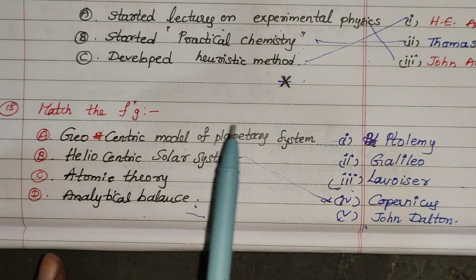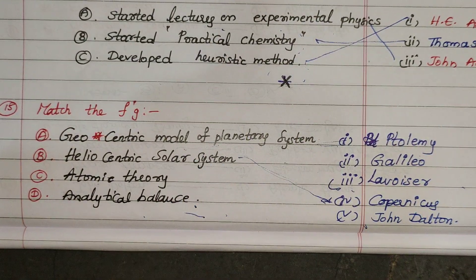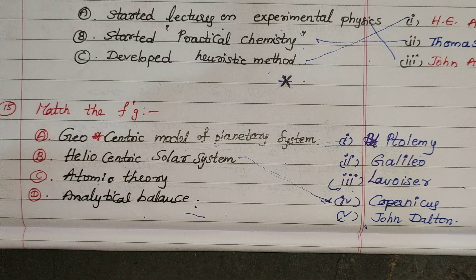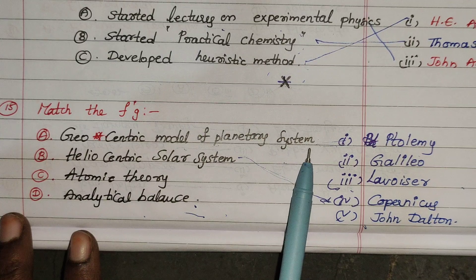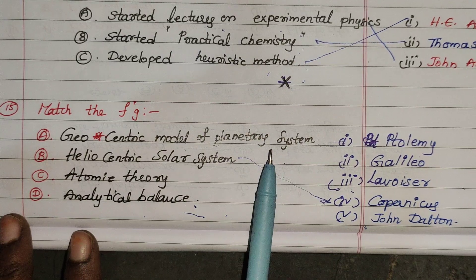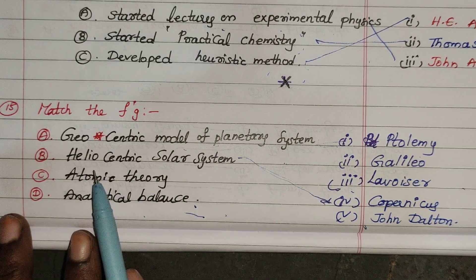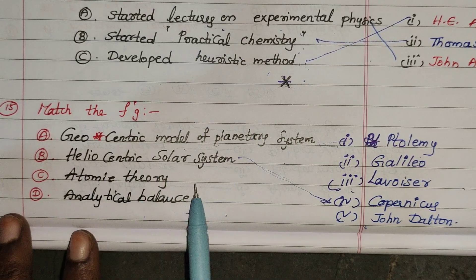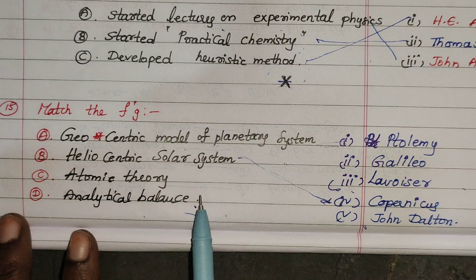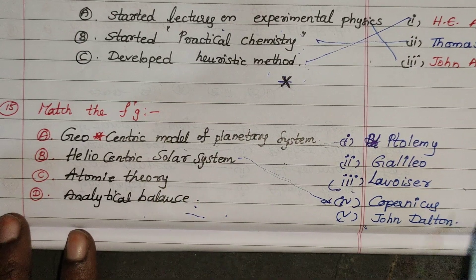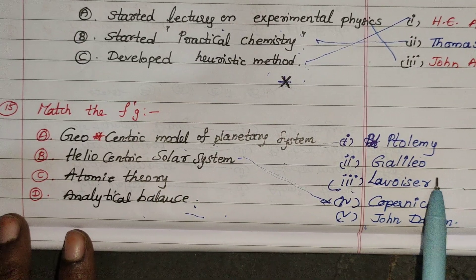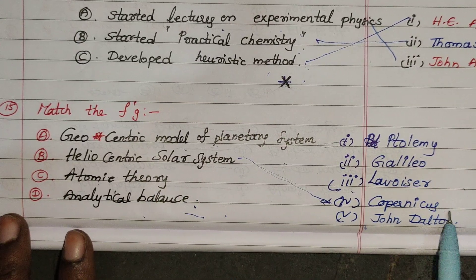Next question — match the following: Geocentric model of planetary system — Ptolemy; Heliocentric solar system — Copernicus; Atomic Theory — John Dalton; Analytical Balance — Lavoisier; Scientific Method — Galileo. Options: A1, B4, C5, D3.